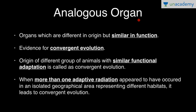Analogous organs are another evidence of evolution from morphology and anatomy. We have already dealt with homologous organs, and this is another one. Organs which are different in origin but similar in function are known as analogous organs. They have different ancestry and different structures, but perform similar functions.